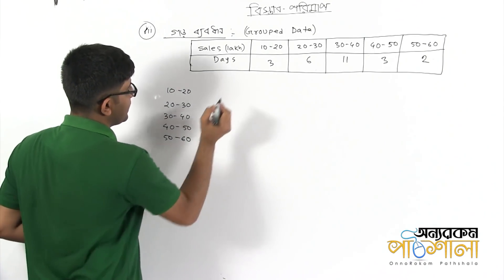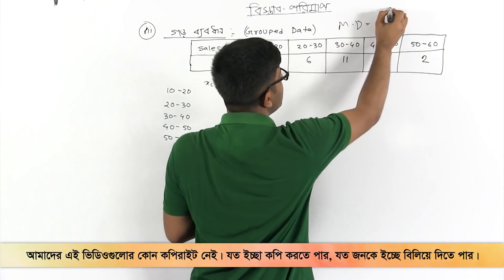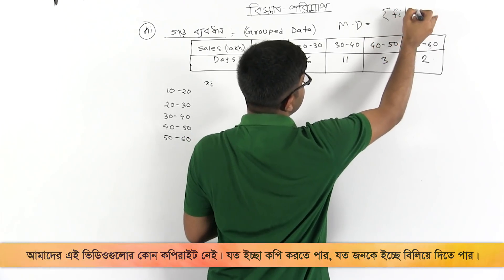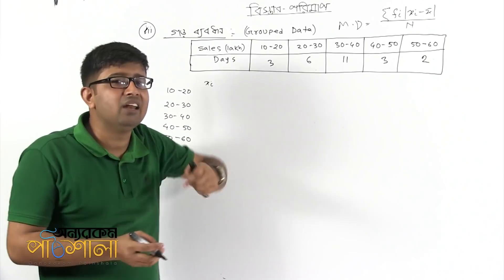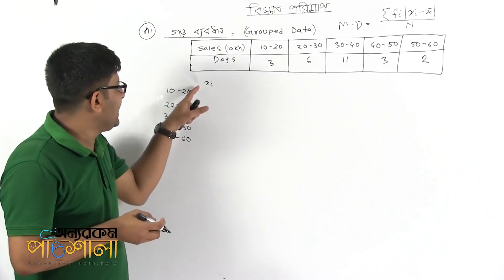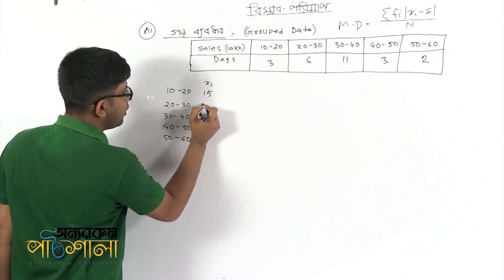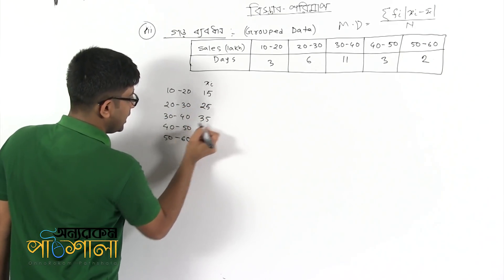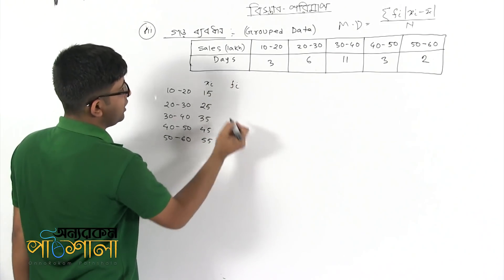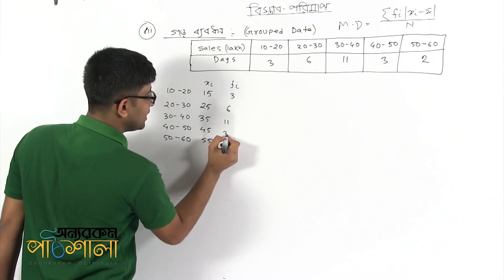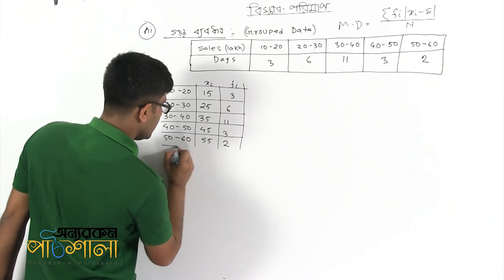This is the second time. We will write the group data again for the second time. If you want to see the difference between the two and the three — I don't have any problem with this, but if you look at it, you will be perfectly done.